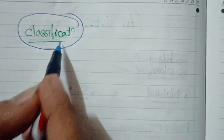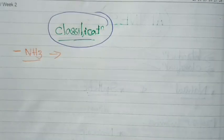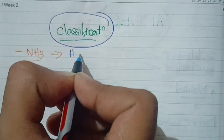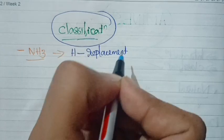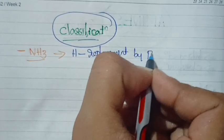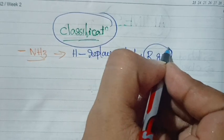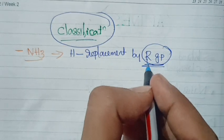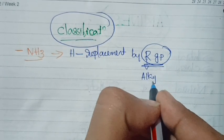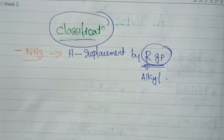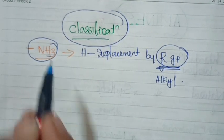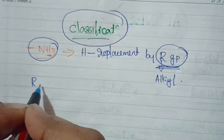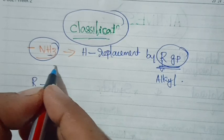Now let's see the classification. Amines are derivatives of ammonia. One or more hydrogens of NH3 are replaced by an R group — we call it an alkyl group, or it can be an aryl group too. If we replace one hydrogen of ammonia by an R group, we get a primary amine.